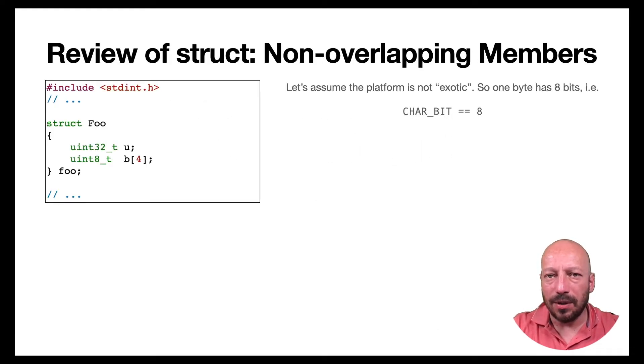For reviewing structs and how the compiler makes sure that these members of a struct are not overlapping, but also for motivating the application of unions with respect to endianness, let's consider this declaration of a struct foo with two members. Let's also assume that we are not using some exotic machine. Let's assume that we have a platform where one byte consists of exactly eight bits. Then this first member has a size of four bytes and also this second member. The second member is an array of four bytes. And a variable of this type would have a size of eight bytes.